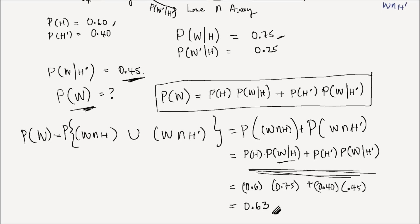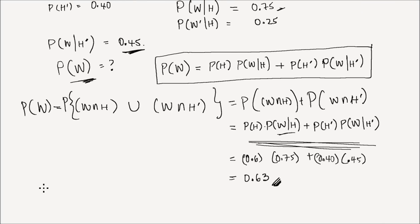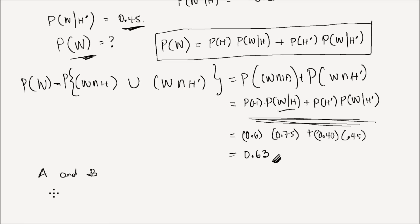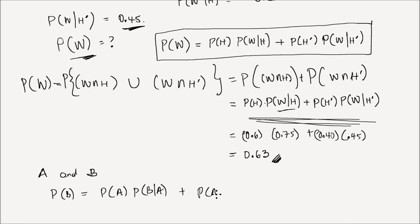So in general, if you have two events A and B, then the law of total probability says the probability of B is equal to the probability of A times the probability of B given A, plus the probability of A complement times the probability of B given A complement.